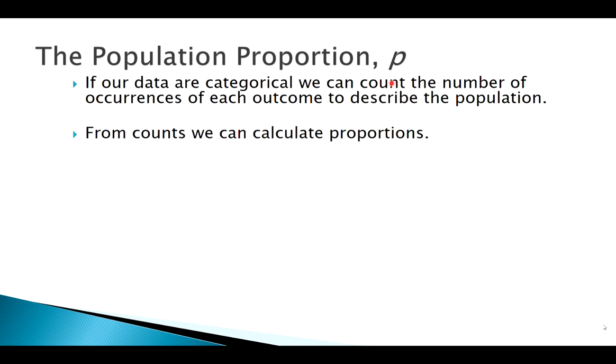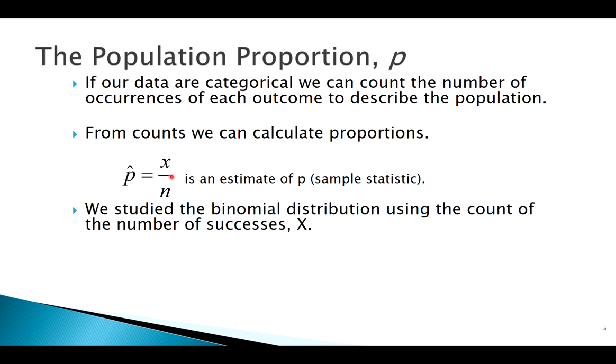P-hat is a statistic we use when we're working with categorical data to estimate the population proportion. So p-hat is how we calculate it. And if you heard that word successes before, maybe you were thinking about this in a binomial context.